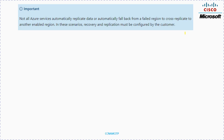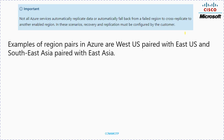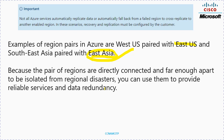Examples of region pairs in Azure include West US paired with East US, and Southeast Asia paired with East Asia. For example in India, Bangalore could be paired with another city like Hyderabad. Region pairs are far enough apart to be isolated from regional disasters, allowing you to provide reliable services and data redundancy.